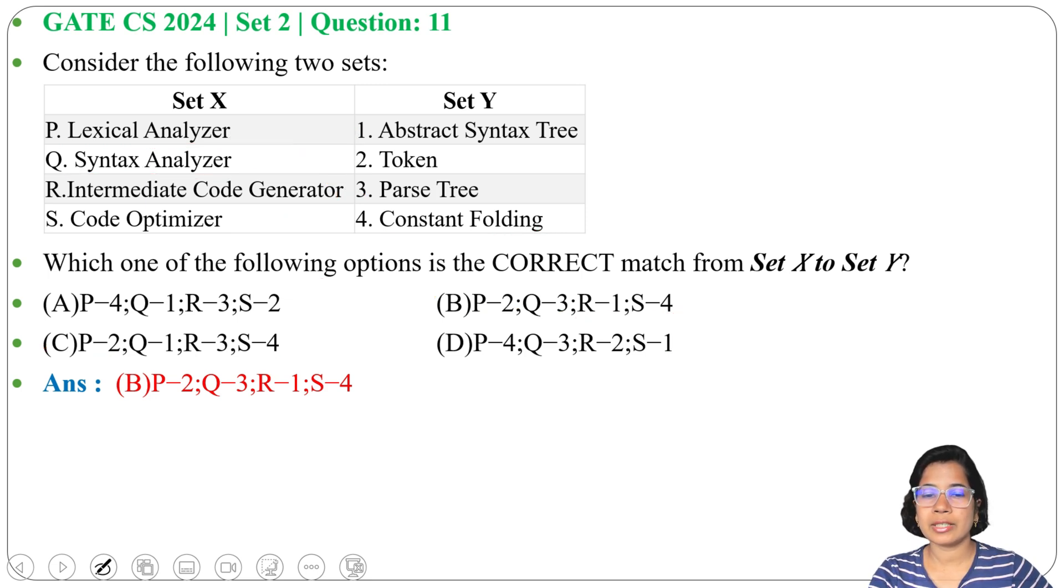Syntax analyzer gives the parse tree, intermediate code generator gives the abstract syntax tree, and constant folding is a part of code optimization. I already discussed all these things in intro of compiler in first chapter. Just go through the lecture.